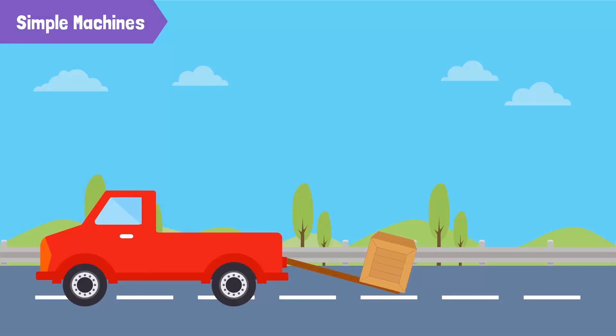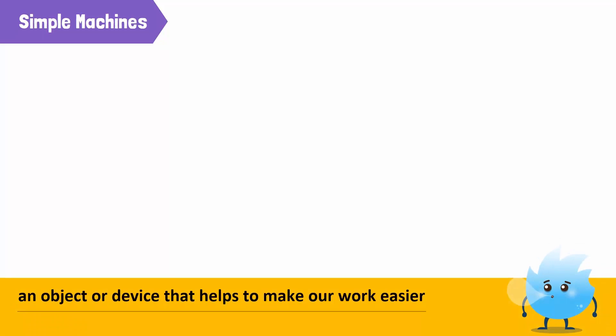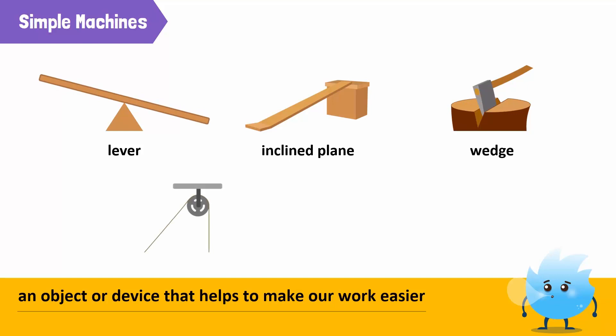We use different machines to make our work easier. A simple machine is any object or device that helps make our work easier. A lever, an inclined plane, a wedge, a pulley, and a wheel are all examples of simple machines. A simple machine does not reduce the amount of work but enables us to do our work more easily.